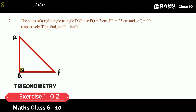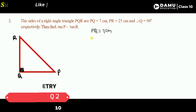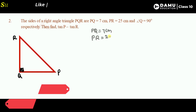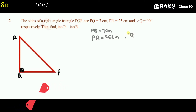Angle Q is 90 degrees. The given data is: PQ equals 7 centimeters, PR equals 25 centimeters, and angle Q equals 90 degrees. We are already taking angle Q as 90 degrees. We need to find tan P minus tan R.